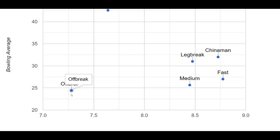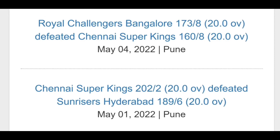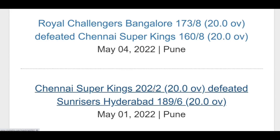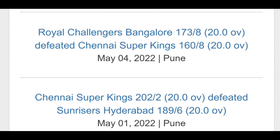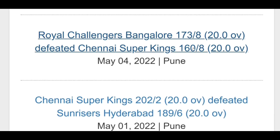The difference is that half spin has an economy of almost 7.2, while medium fast and medium pace have an economy of around 9. The final record shows figures of around 11.3 and 12.